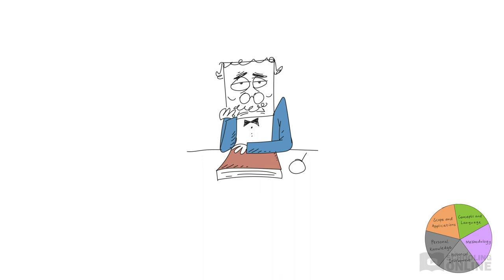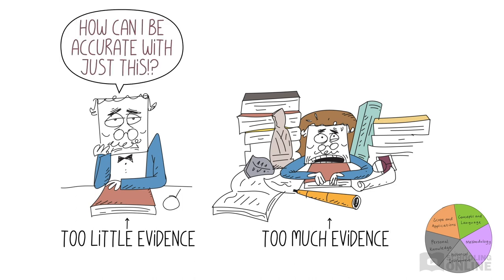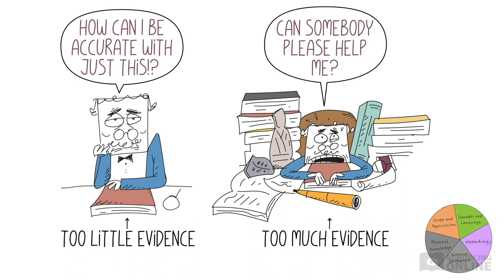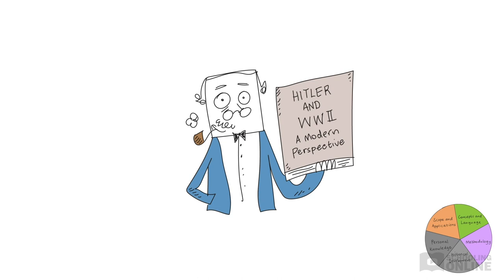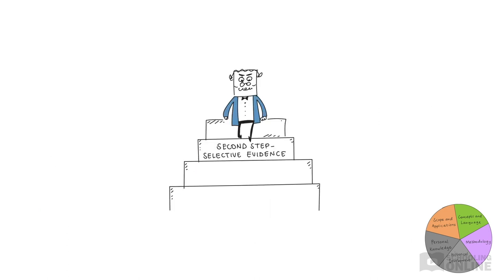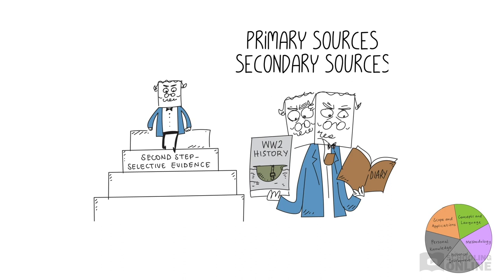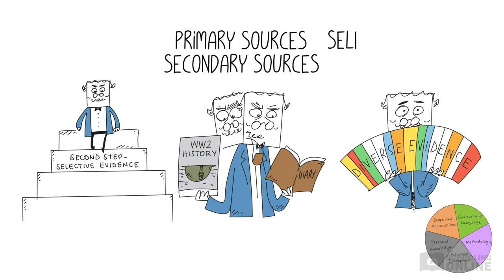The problem is, historians will often have too little evidence or too much evidence. When there's too little, it can be difficult to put together an accurate image of the past. But if there's too much, it's simply impossible to analyse everything. Imagine studying World War II — it would be impossible to fit information from all the relevant photos, documents, recordings and newspaper articles into one overarching text. That's where the second step comes in: selecting evidence. Historians need to choose primary and secondary sources to focus on, and ideally will select and analyse a diverse range of evidence to support their theories.